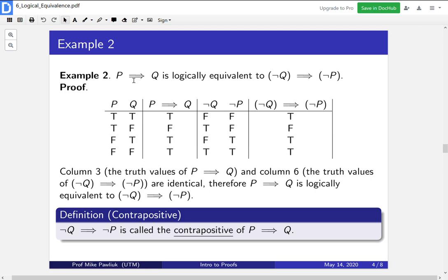Since this is logically equivalent to the implication, we give it a special name. We call it the contrapositive. So not Q implies not P is called the contrapositive of P implies Q. We'll see this later on in the course. This is something that we're going to care about quite a bit.